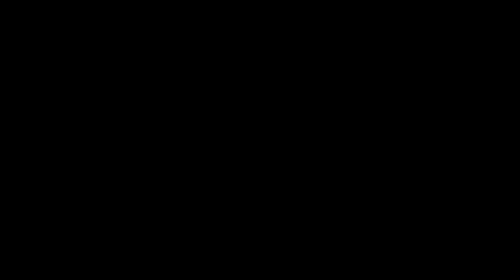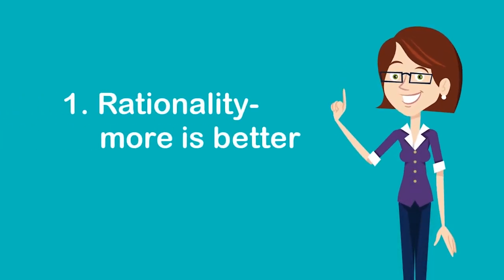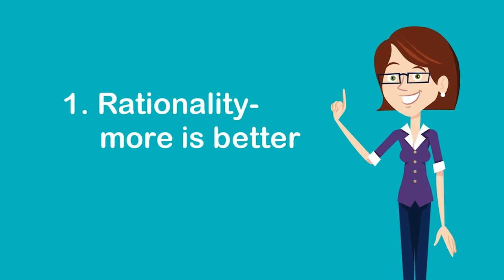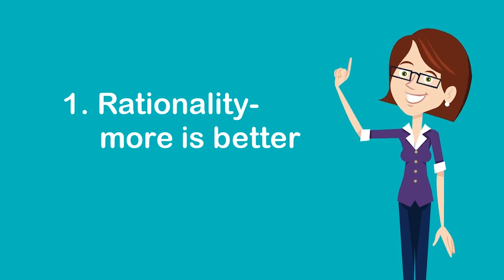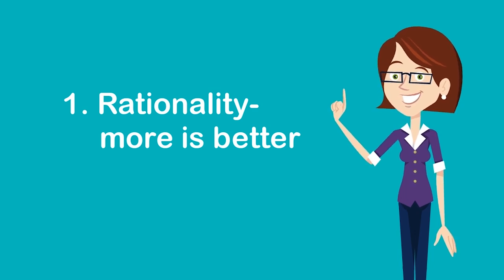Let us now try to understand the Ordinal Utility Theory. This theory was proposed by modern economists. According to modern economists, the satisfaction derived from goods and commodities can be ranked according to the preferences of consumers, and hence they are ordinal in nature. The basic assumptions of the Ordinal Utility Theory are: Number one, rationality — just like the Cardinal Utility Theory, the consumer is assumed to have knowledge about the market and tries to maximize his or her satisfaction. Thus, more is always better.